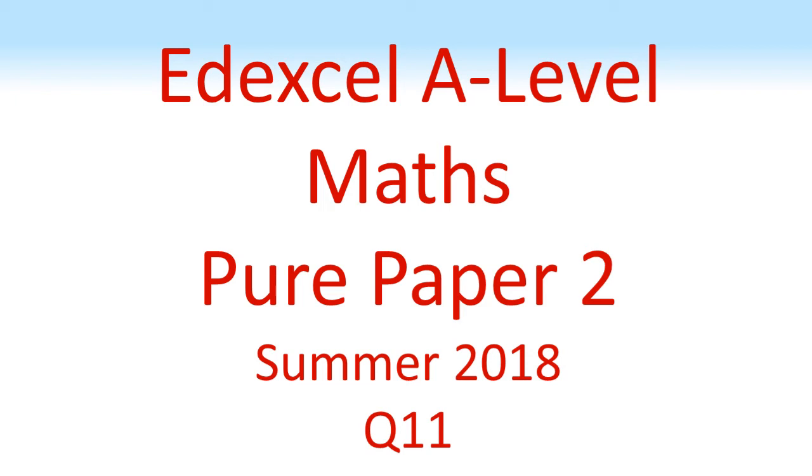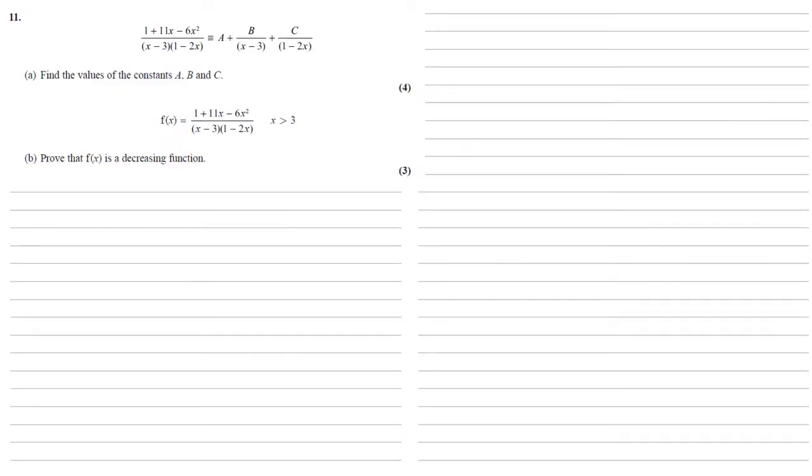Edexcel A-Level Maths, Pure Paper 2, Summer 2018, Question 11. We're given that the fraction (1 + 11x - 6x²)/(x - 3)(1 - 2x) is identical to a + b/(x - 3) + c/(1 - 2x), and we want to find the values of the constants a, b, and c.